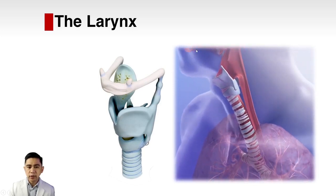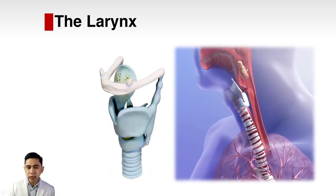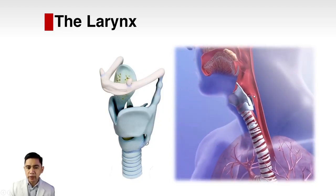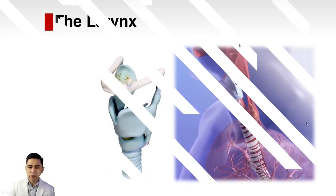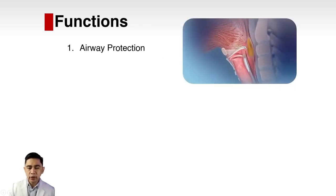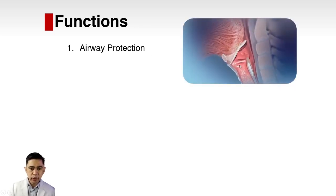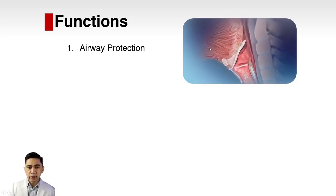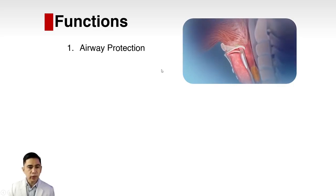This is the oral cavity, this is the hypopharynx, this is the larynx, and this is the entrance of the esophagus. The first function of the larynx is airway protection. As seen in this animation, it protects our airway from food that we ingest, separating food and the air that we breathe.